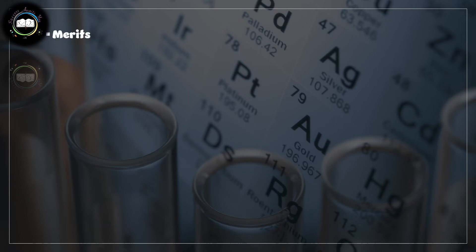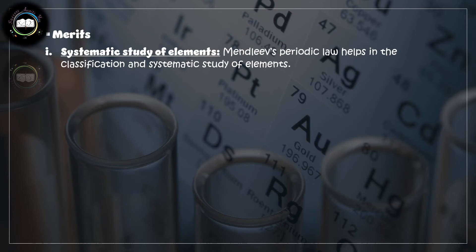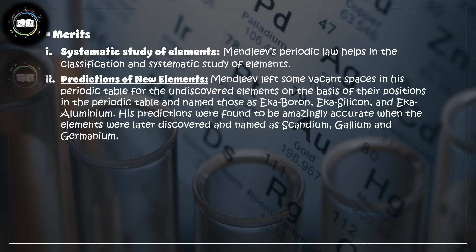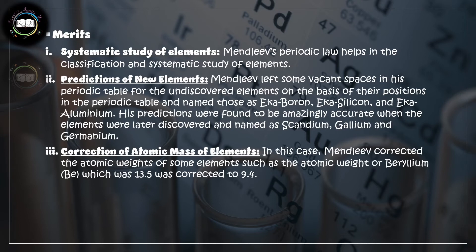The merits of Mendeleev's periodic table included the systematic study of elements. He made predictions of certain elements which were found to be amazingly accurate when those elements were later discovered. Mendeleev also corrected the atomic weights of some elements — for example, the atomic weight of beryllium, previously listed as 13.5, was corrected to 9.4.